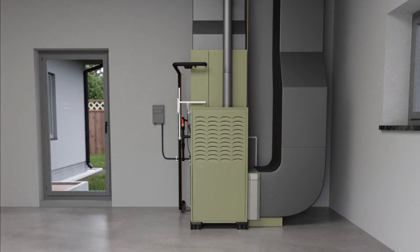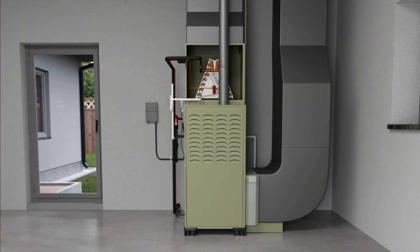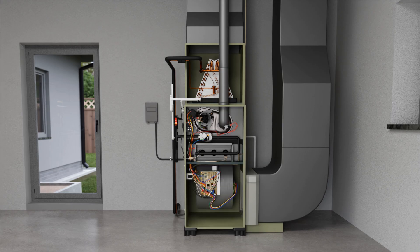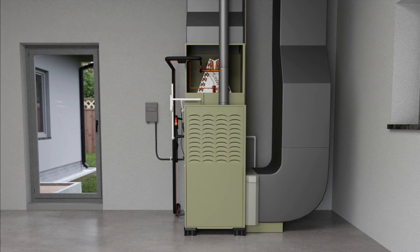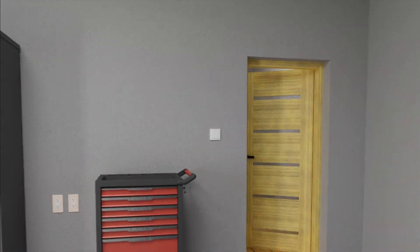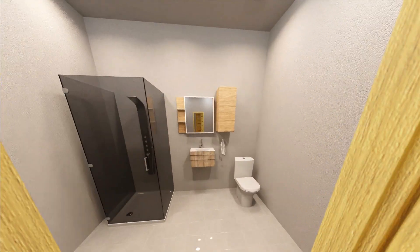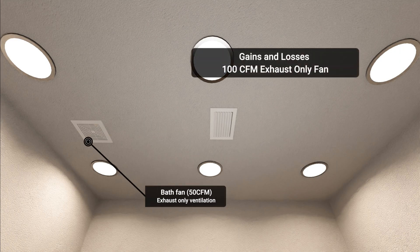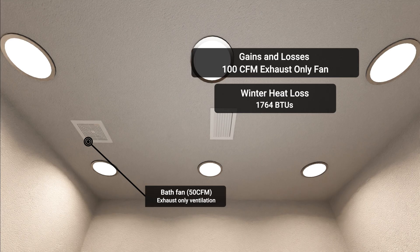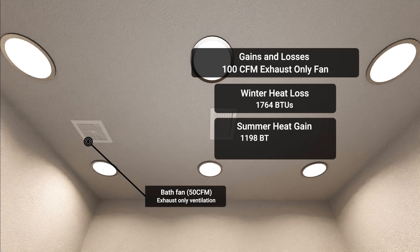We also need to know if the air handler or furnace is in a conditioned space or an unconditioned space. In many cases the air handler is in a garage or an attic, which are usually unconditioned spaces, but air handlers may also be in closets within conditioned spaces. In this example, 100 CFM of exhaust-only ventilation would be responsible for 1,764 BTUs of heat loss in the winter. In the summer, we can expect infiltration to be responsible for 1,198 sensible and 2,004 latent BTUs of heat gain.